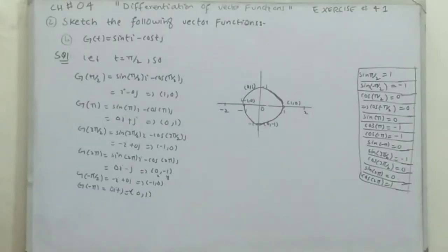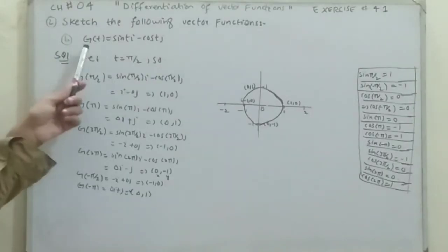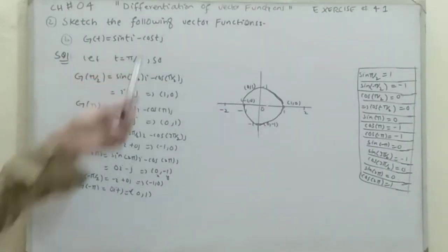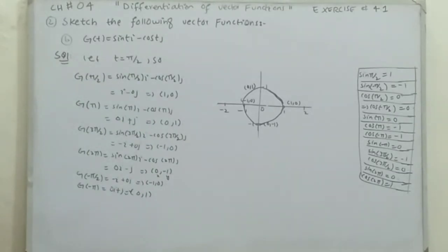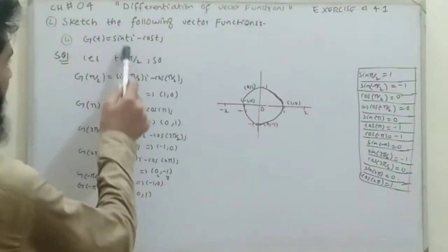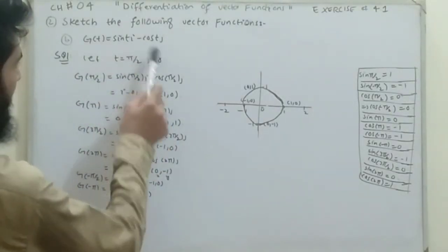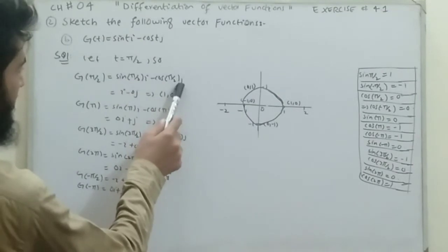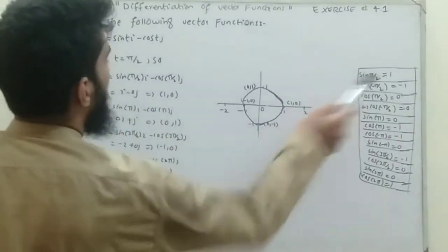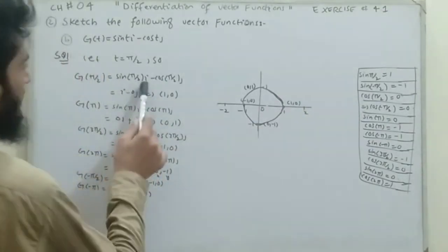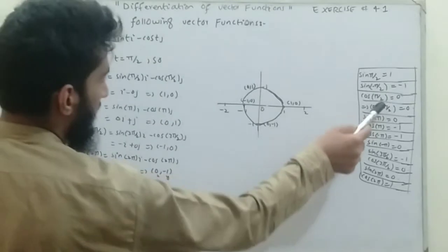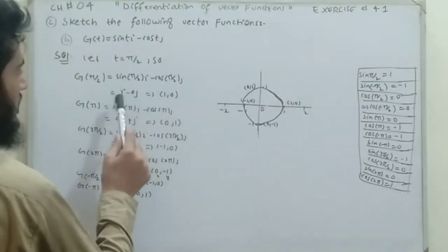Now moving to part b: g(t) = sin(t)·i - cos(t)·j. Let t = π/2. It becomes sin(π/2)·i - cos(π/2)·j. sin(π/2) = 1, so the i-component is 1. cos(π/2) = 0, so the j-component is 0.